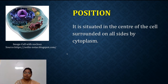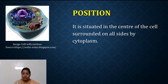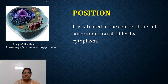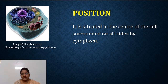Coming to the position of nucleus — in the eukaryotic cell structure, we are able to see that the central place is given to the nucleus. So nucleus is situated in the center of the cell and it is surrounded by cytoplasm from all sides.